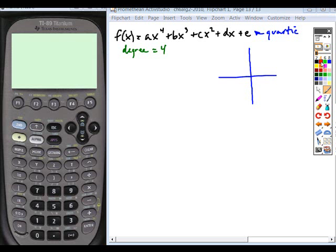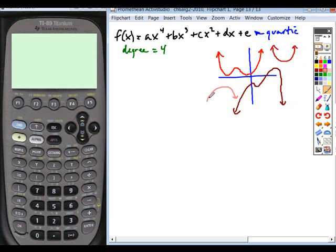And the graph of a quartic equation is going to look like this. Now, again, it might not be symmetric, but this is what the graph is going to look like. It's possible it has only one curve. It could also appear like this. Or like this. But it's going to be...